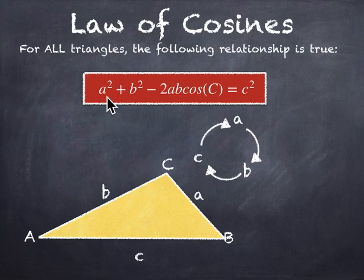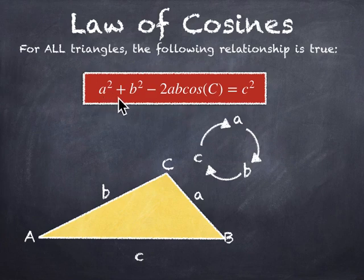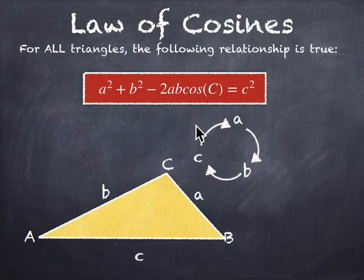The law of cosines says a squared plus b squared minus some combination of a, b, and the angle between them is equal to c squared. I hope you recognize in there a squared plus b squared equals c squared — that, of course, is the Pythagorean theorem. The law of cosines is an even more powerful equation because it's true even if you don't have a right triangle, and that's what this middle term is — it's kind of a fudge factor to make this work.